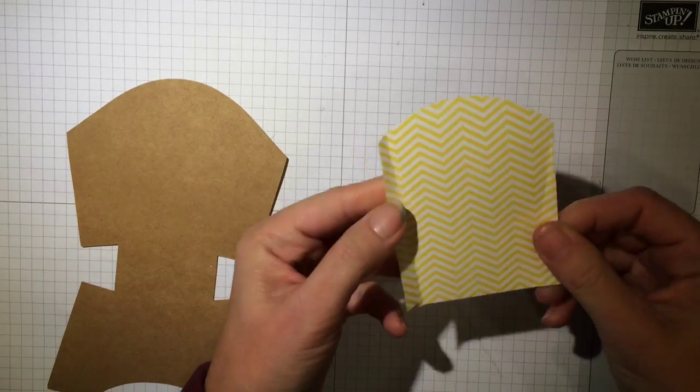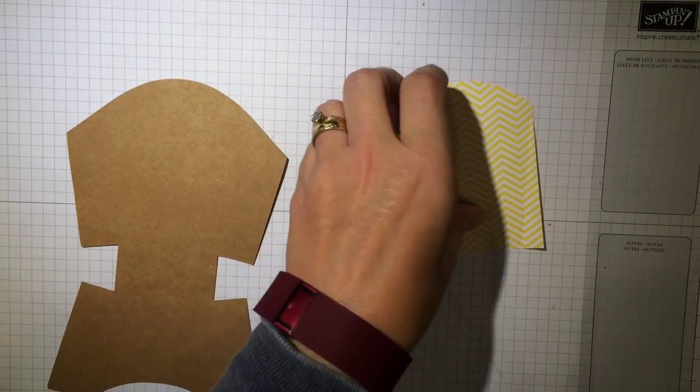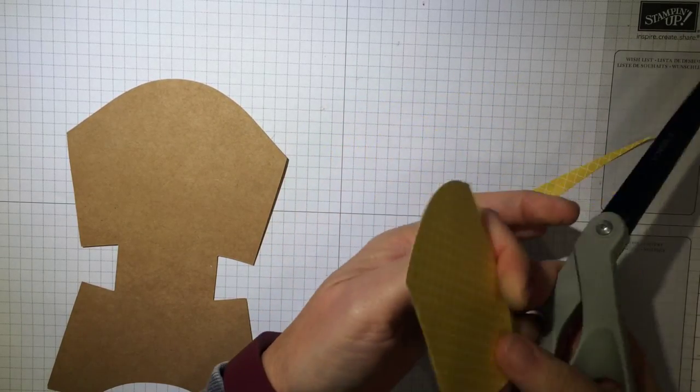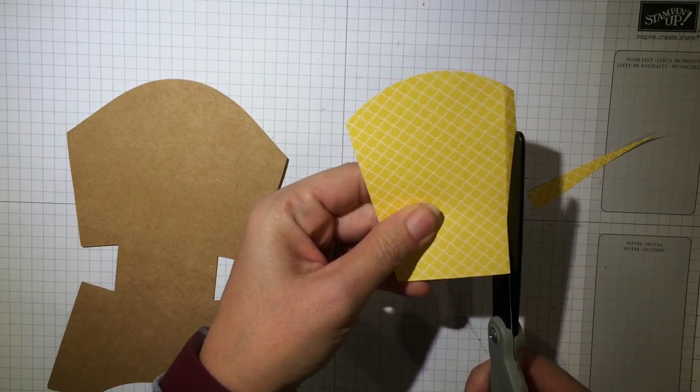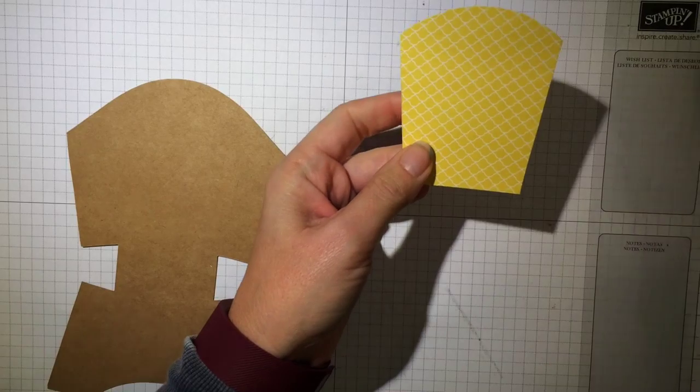Once you have your smaller piece out of the DSP, you're going to cut where those fold lines are because we don't need the extra just like that. Down here you can just cut it off the bottom because you're not going to be able to see it.